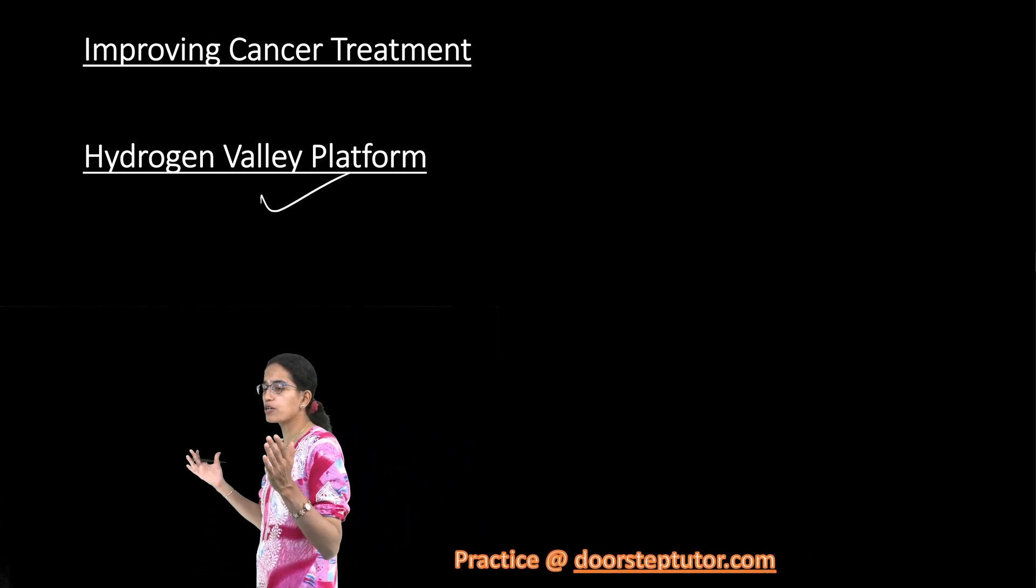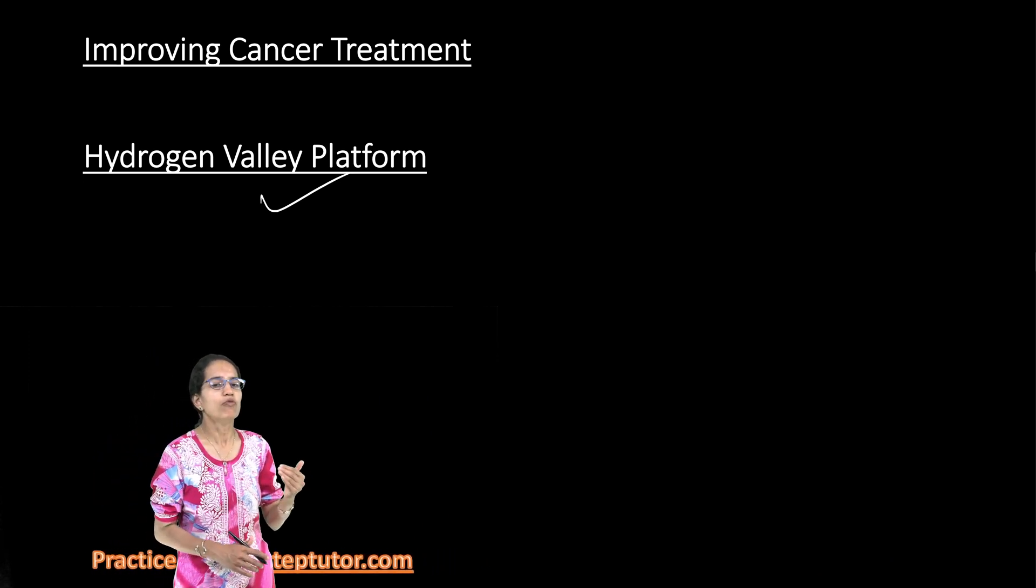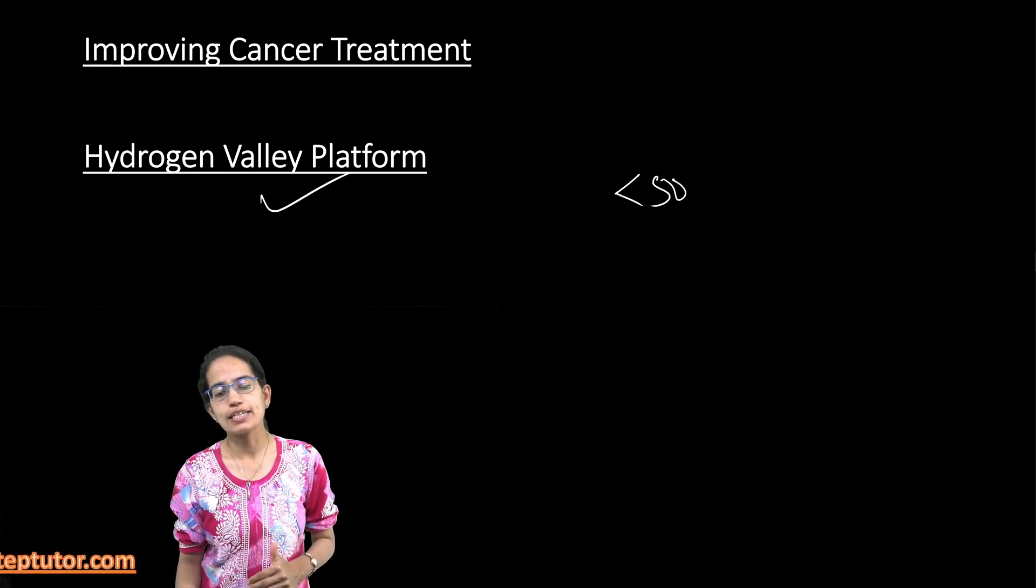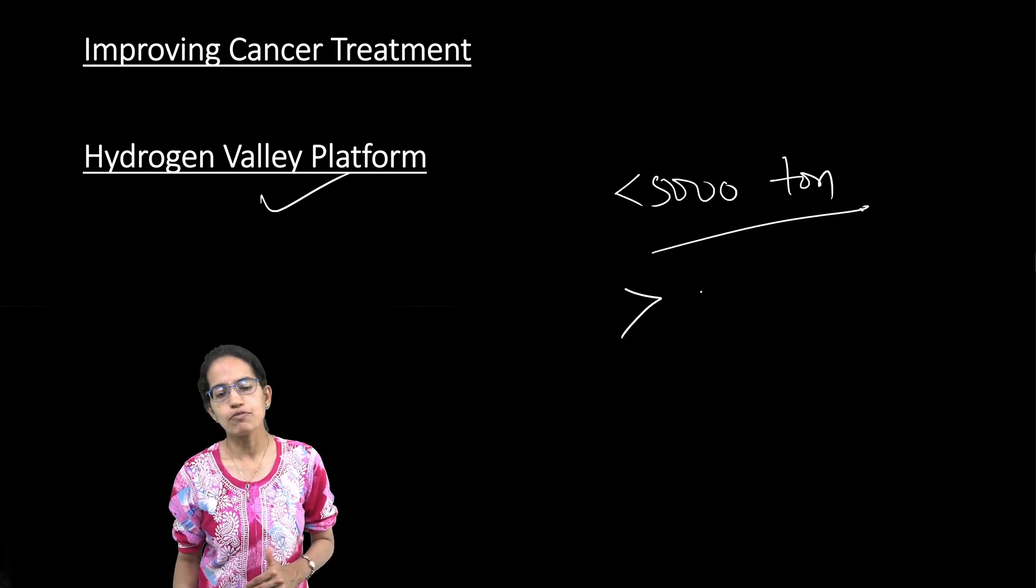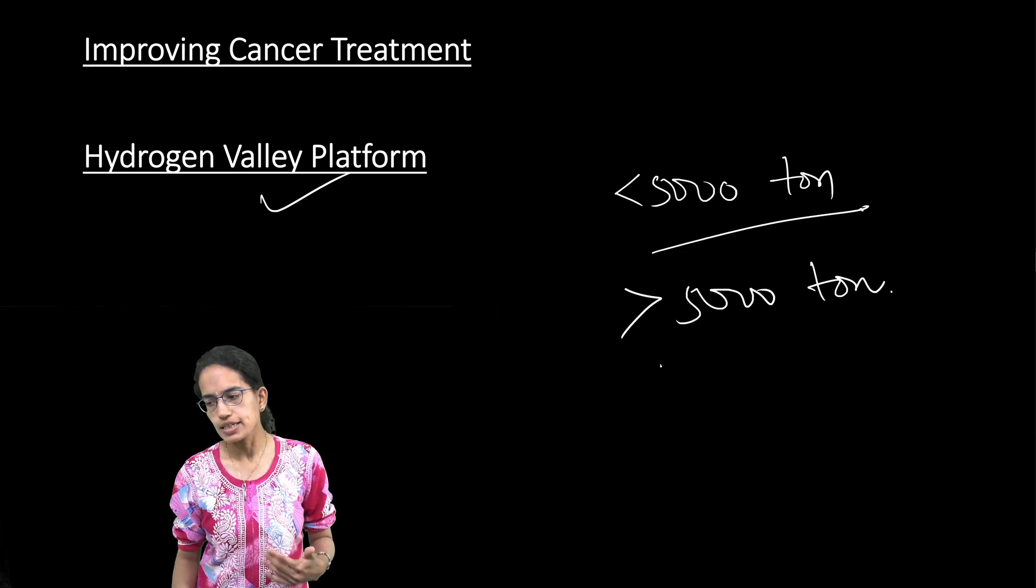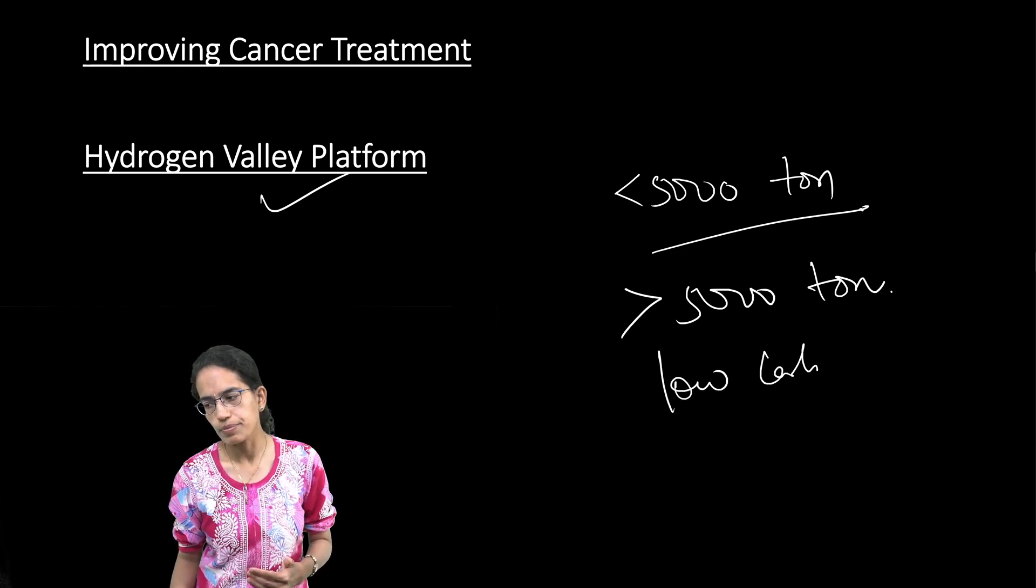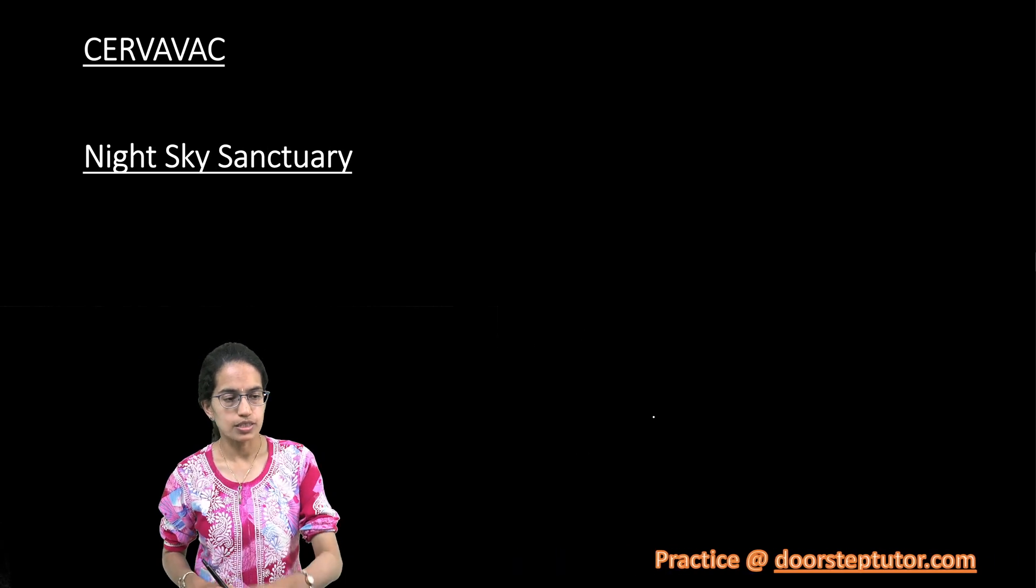Electrolysers are brought, low carbon hydrogen technologies are brought. This platform would come into three steps. One would be less than 5,000 tons of renewable energy production. The second would be more than 5,000 tons of renewable energy production. And the third phase would involve low carbon hydrogen technology. All of these three stages would be initiated one by one.